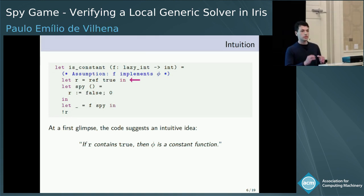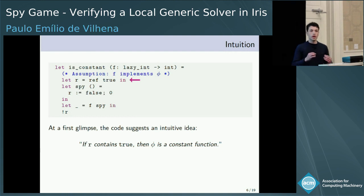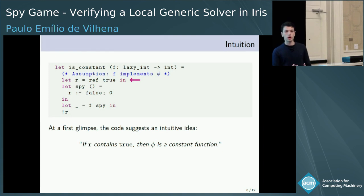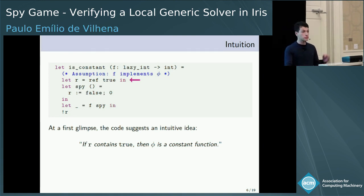We will only be able to infer that phi is a constant function after the execution of f applied to spy. Therefore, this is not an invariant — the assertion only becomes true after the execution of f applied to spy.